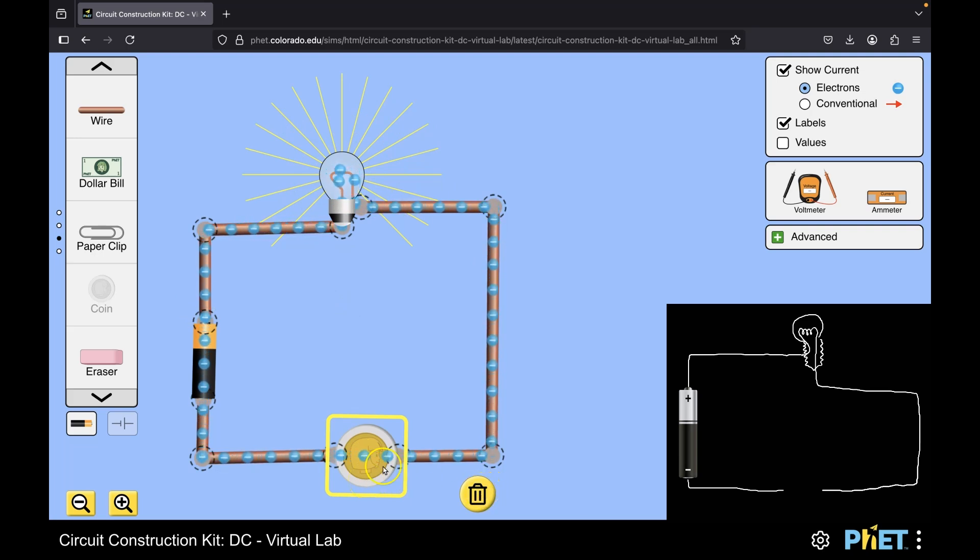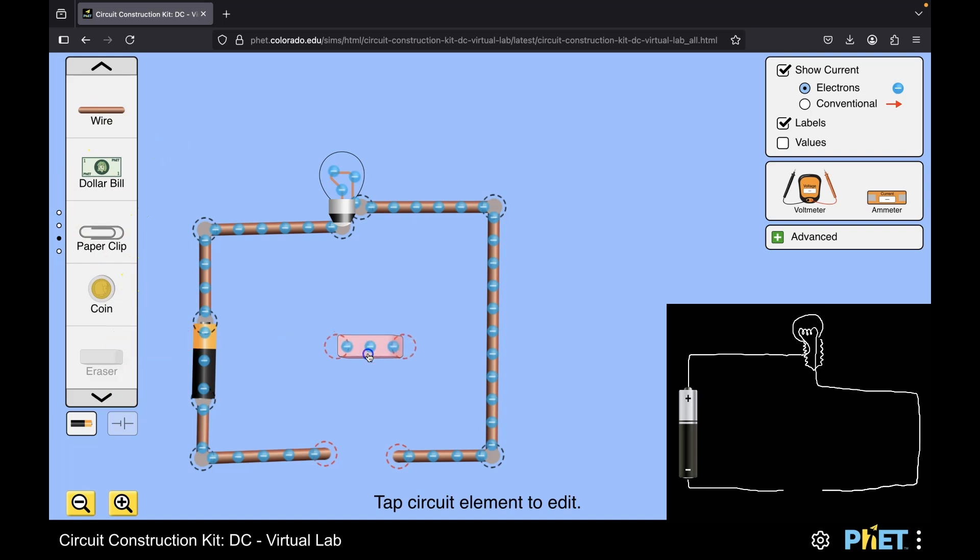Okay, now let me remove this coin. So to remove anything, all you need to do is click on the object and then go to delete and you can remove it. Let's say I place something else. Let's say I take this eraser. What do you think would happen if I place the eraser? Think about it. I'd like you to predict the result of this. Okay, let's go ahead and do it. Let me take this eraser and attach it to the wire. The moment I do it, nothing happens. The electrons are not moving and the bulb is also not glowing. So that means that this eraser is an insulator.